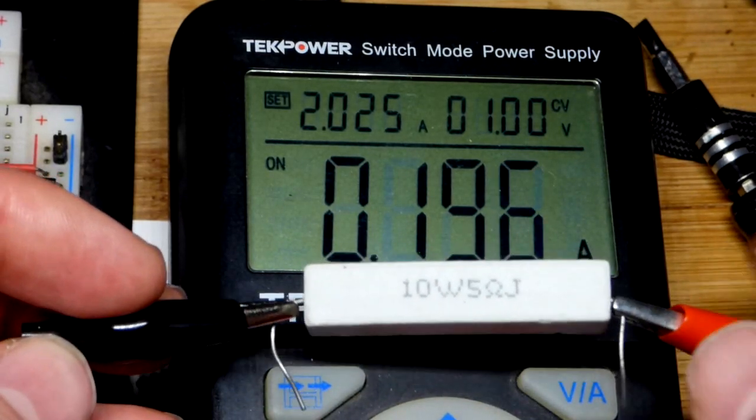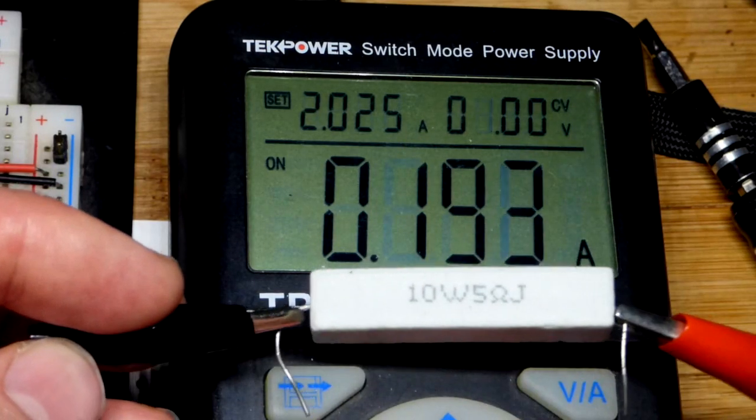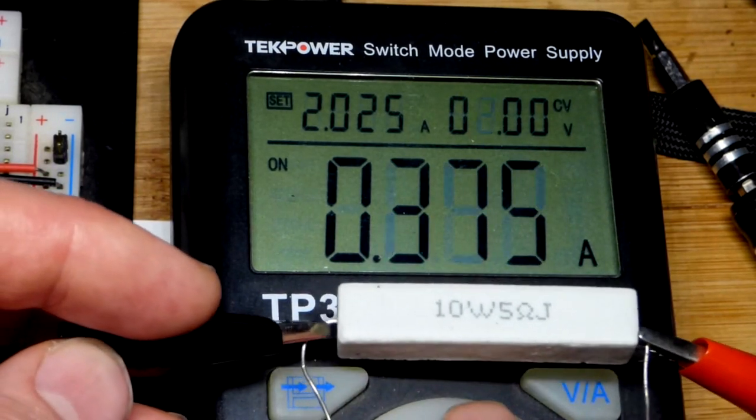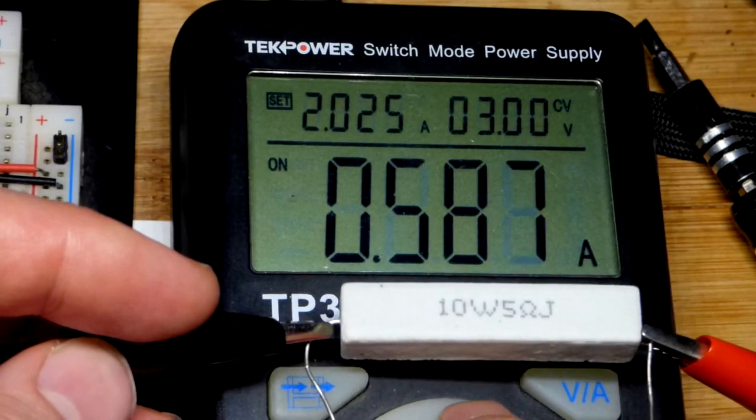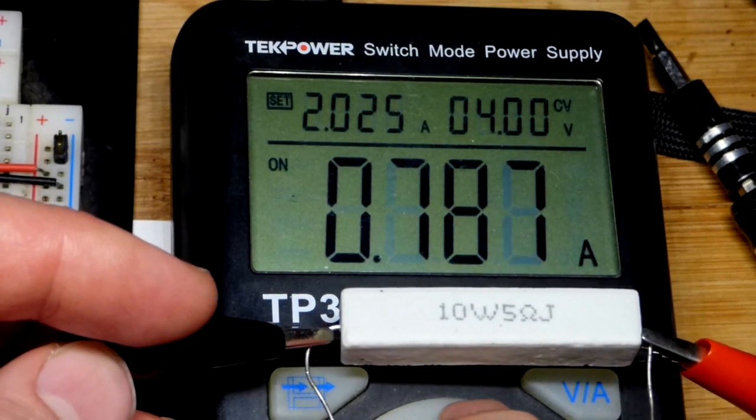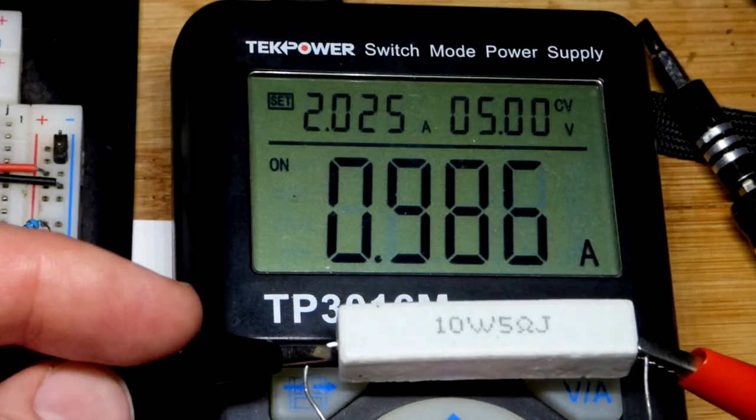When I get a good connection with one volt across it, I go up to two volts about 400 milliamps, three volts 600, four volts 800, and then five volts.